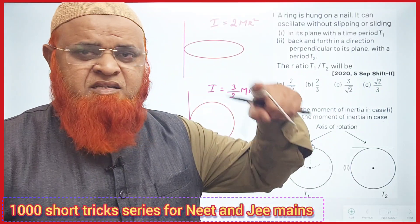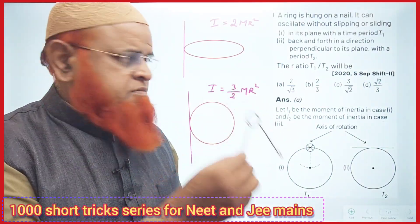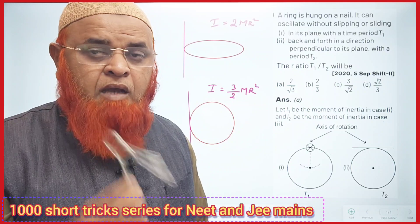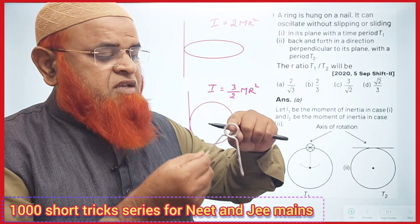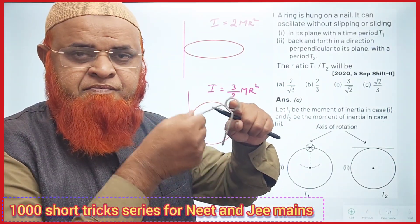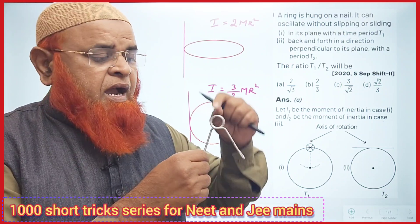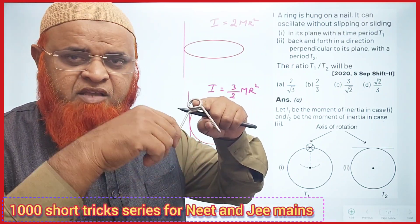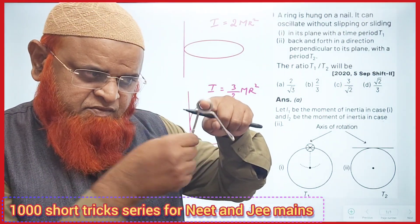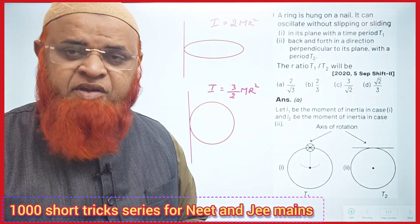Consider a ring — imagine this is a ring. If the ring is oscillating like this (side to side), what is the time period? And if the same ring is oscillating to and fro like this (front and back), then what is the time period?